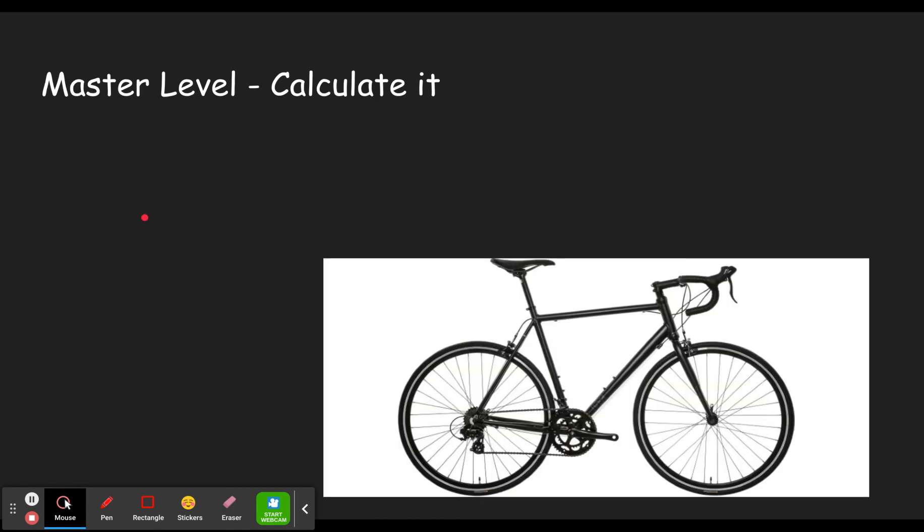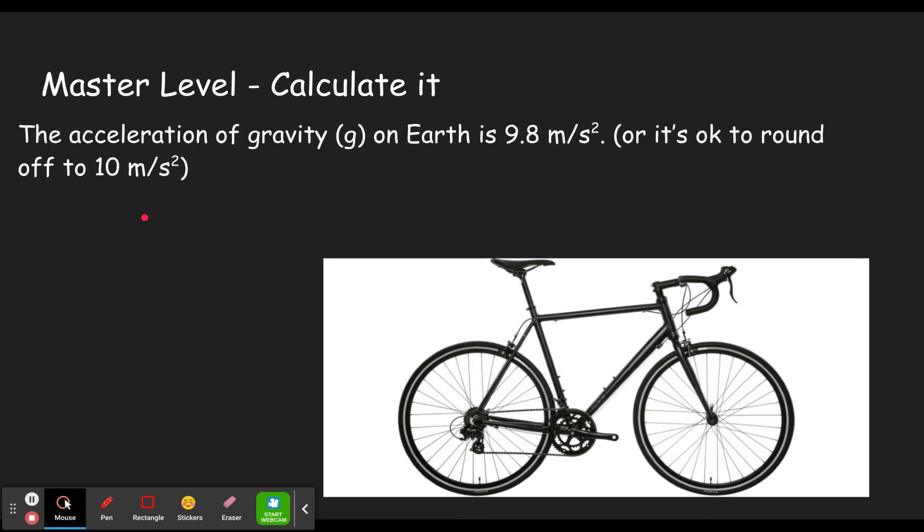Moving on to the master level. So in the master level, you have to be able to calculate it using that equation, W equals mg. The acceleration of gravity on Earth, as we said, is 9.8 meters per second squared. For the master level, everything you're doing is on Earth. For this level, it is okay to round off to 10 meters per second squared. You can use 9.8 or 10, and anything in that range will give you the right answer.